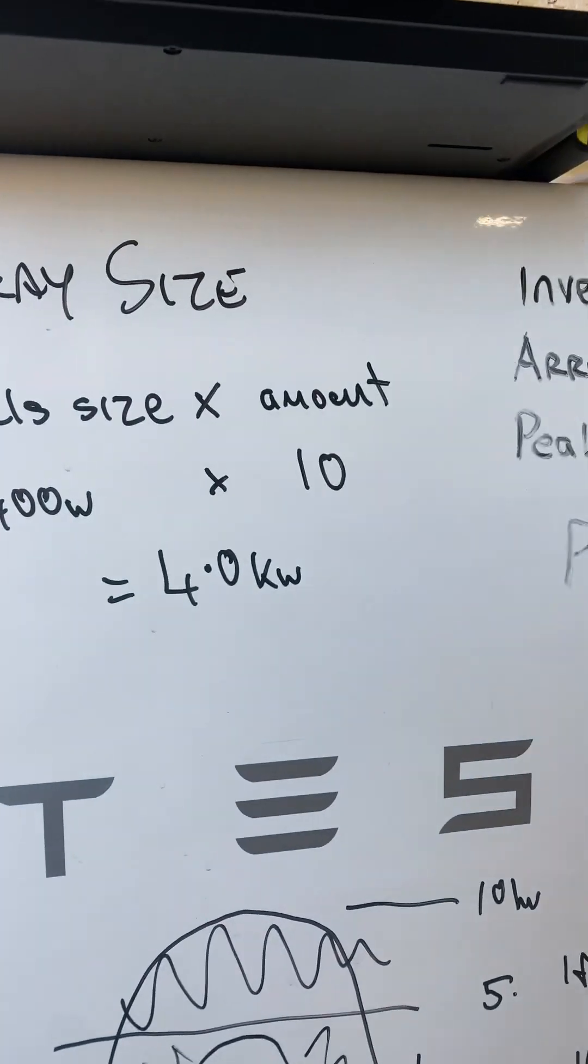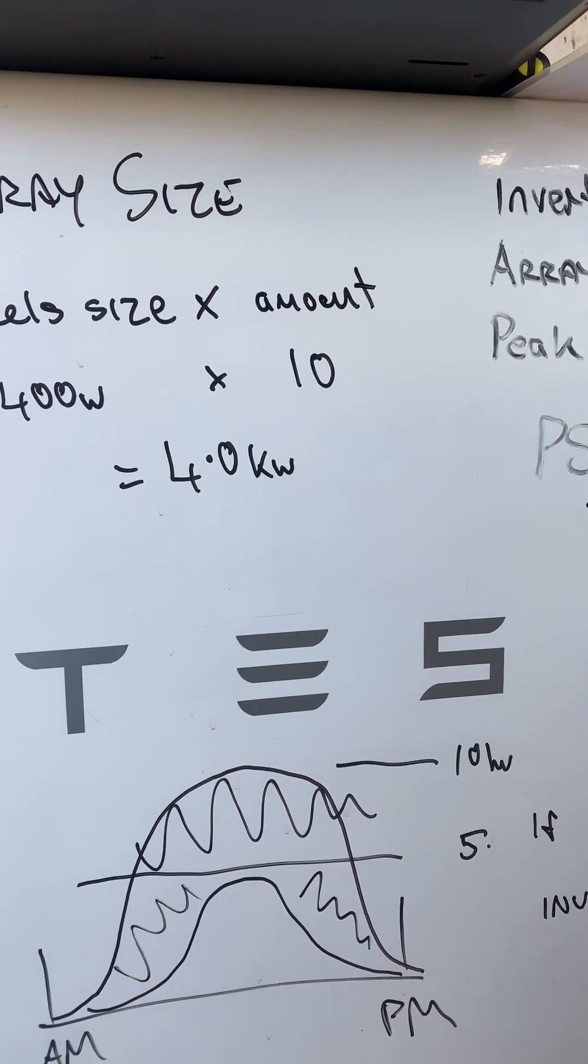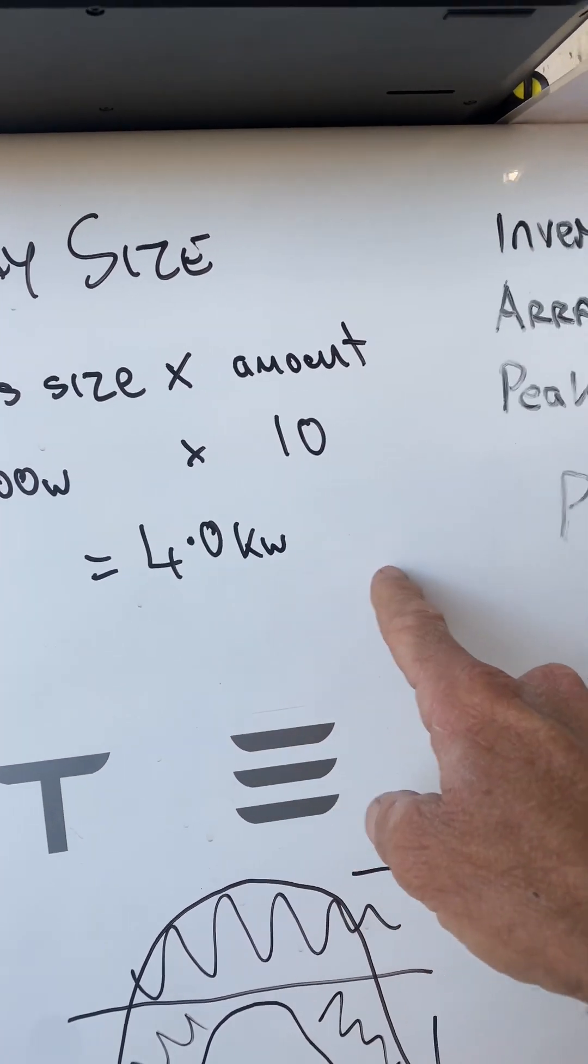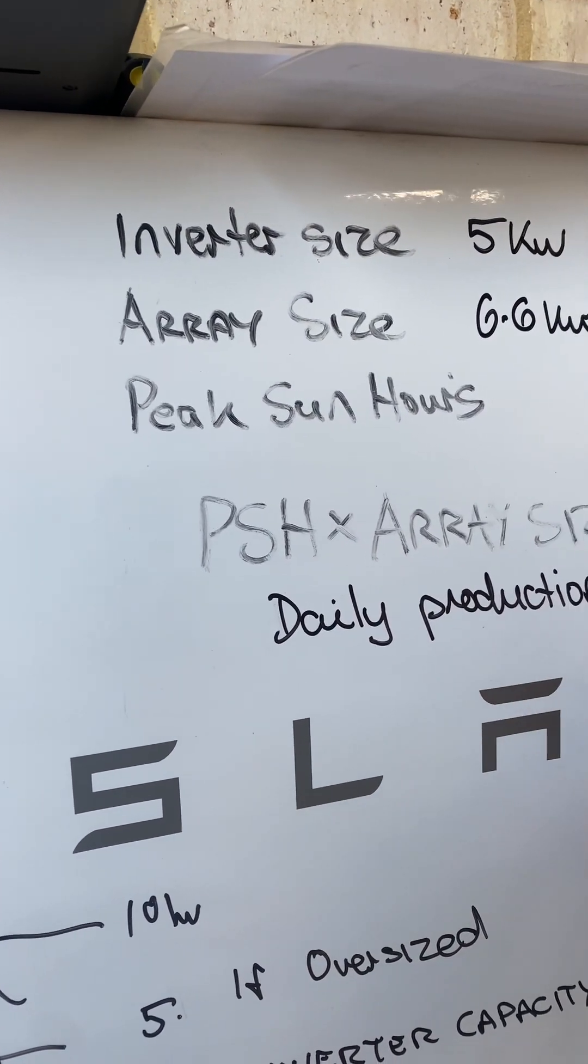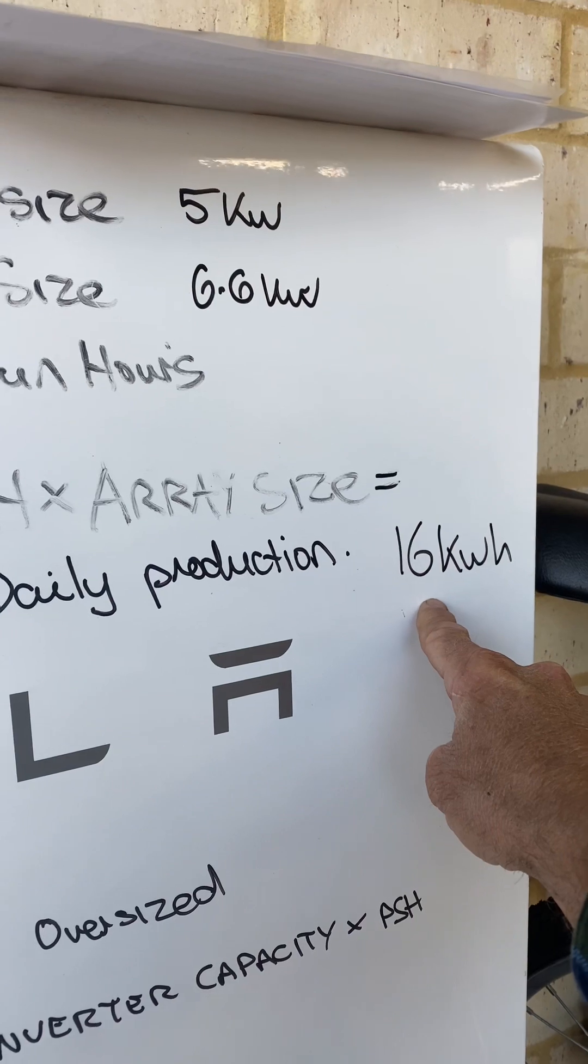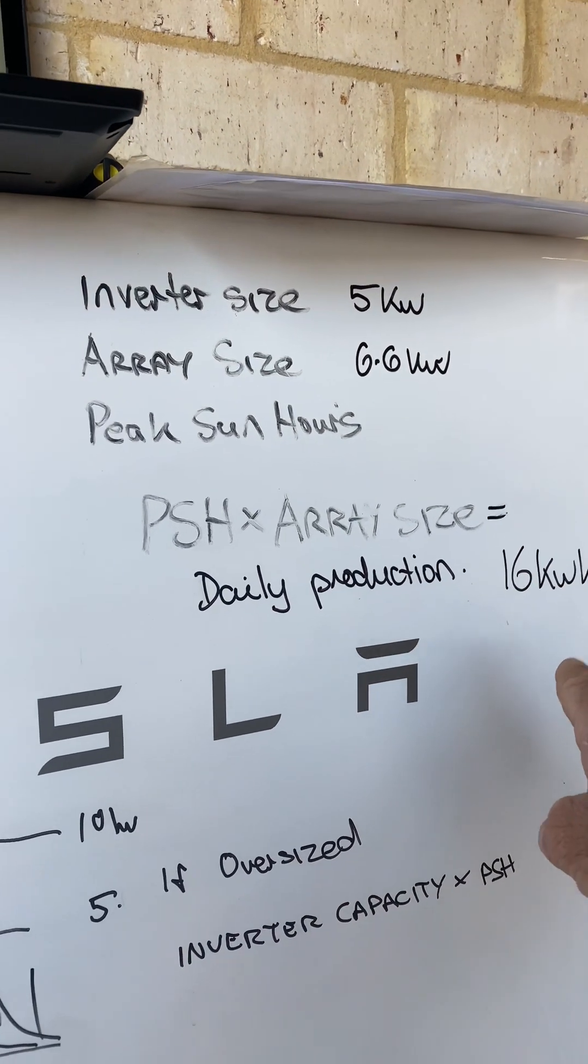So let's say for this particular scenario we've got 4 hours of peak sun hours, so we're going to go 4 times 4. Four peak sun hours times 4 kilowatts gives me 16 kilowatts. Now that's a baseline number. Your solar system should be making more than that.